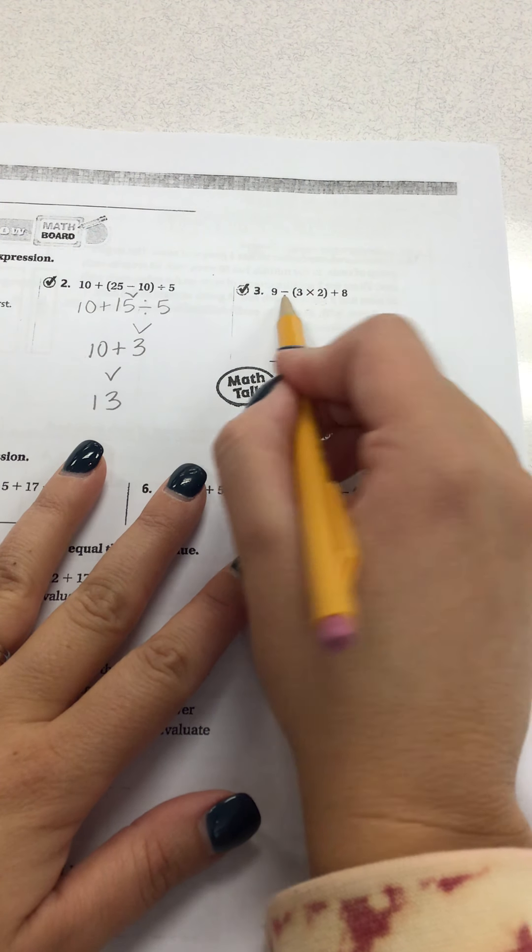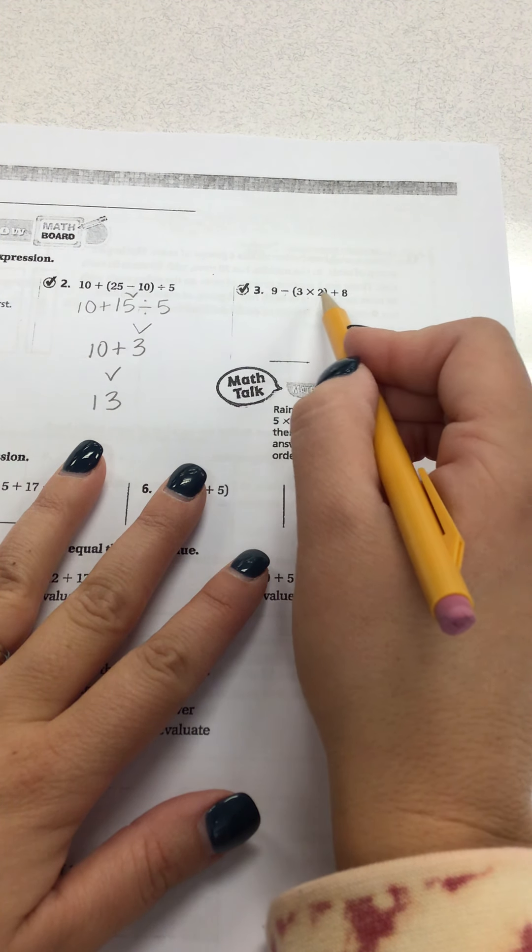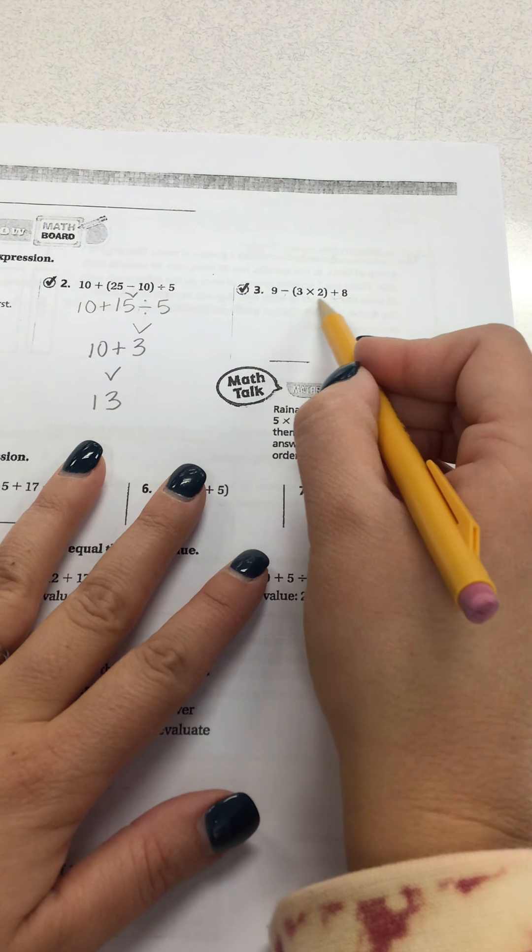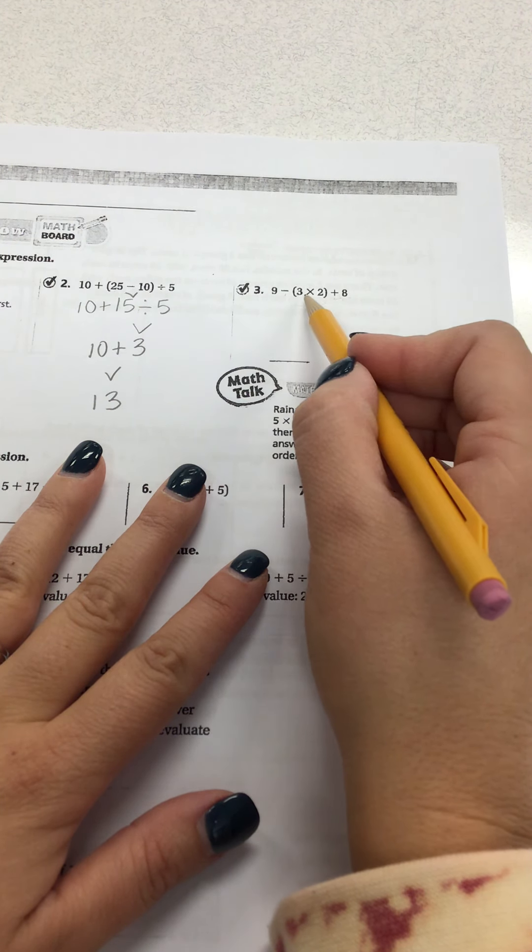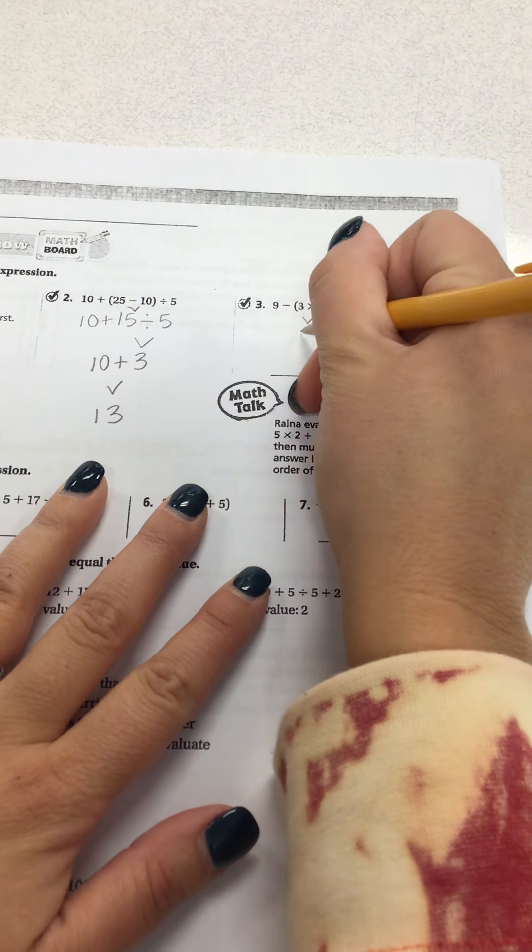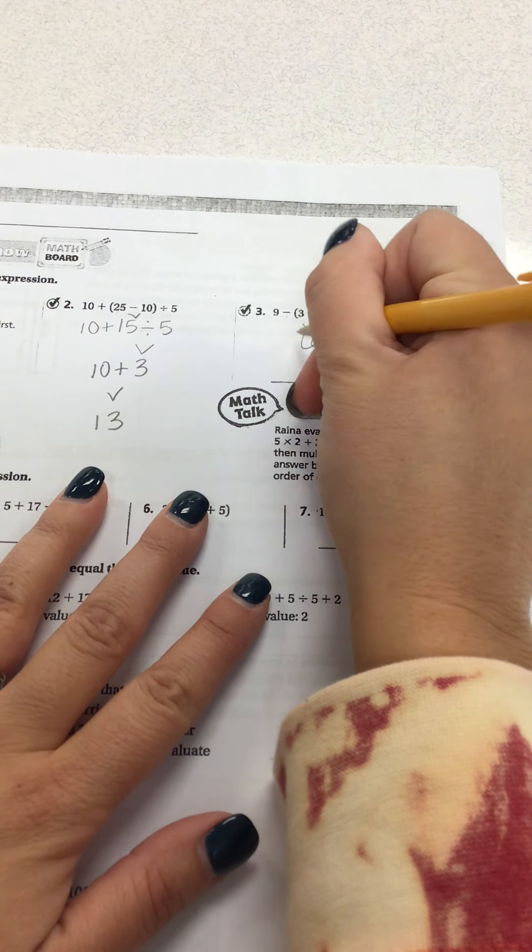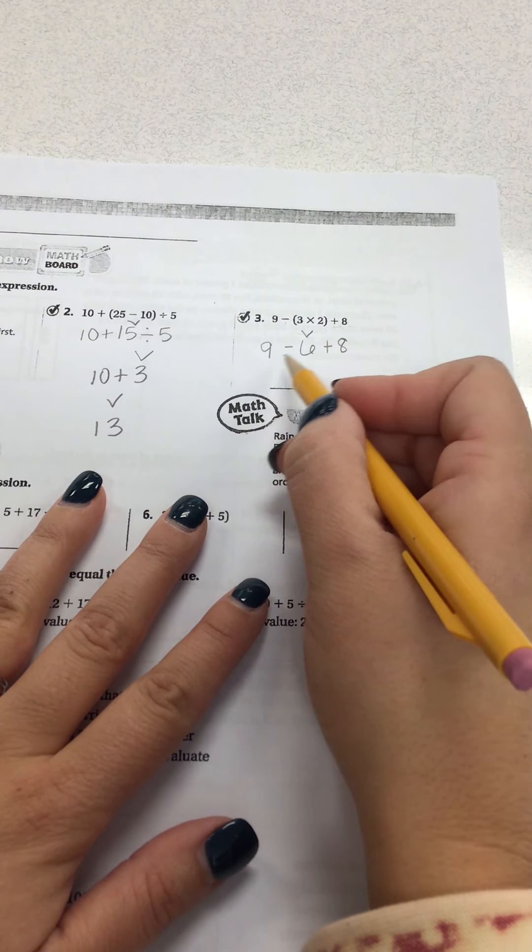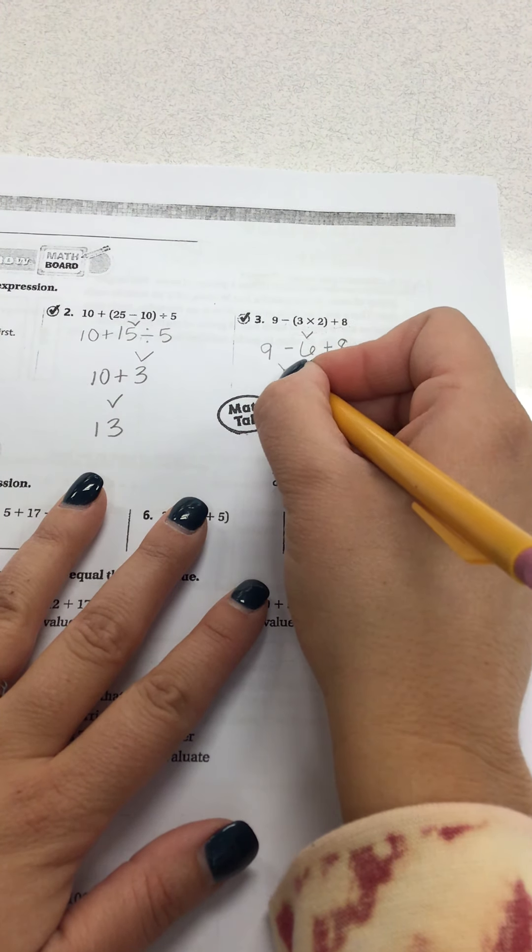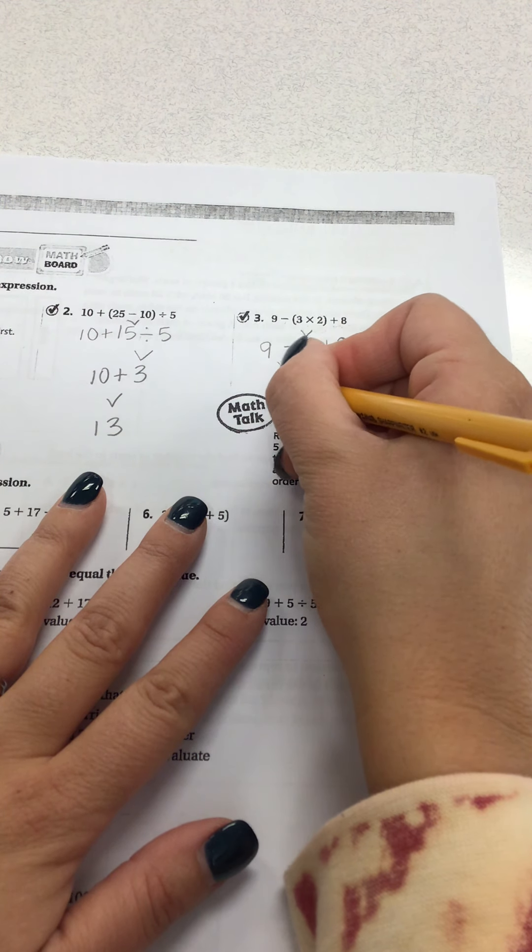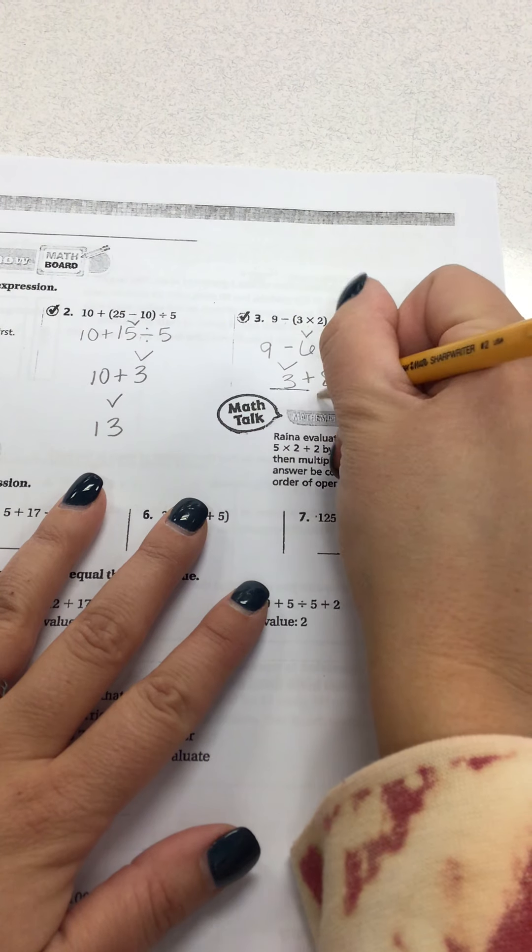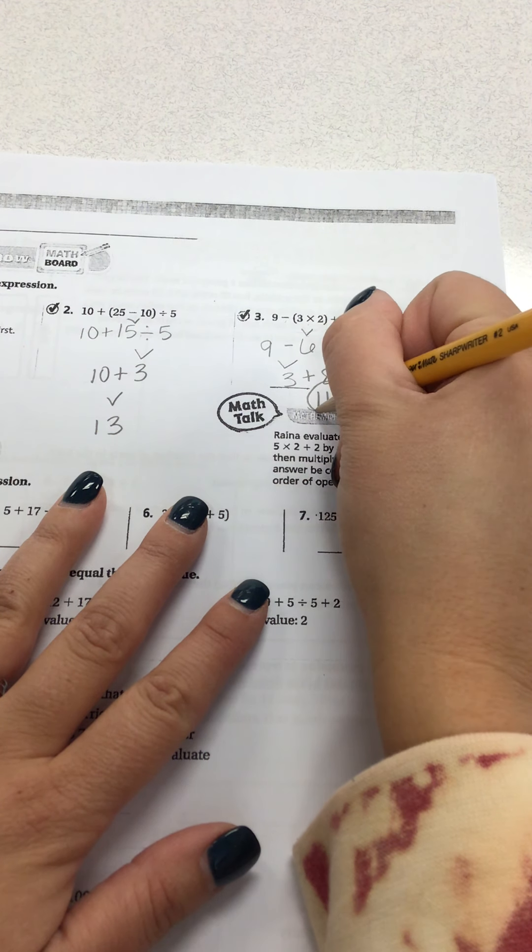So I have subtraction, multiplication, and parentheses, and addition. So I'm going to start with my parentheses because that comes first. 3 times 2 is 6. Bring down the plus 8 and the 9 minus. Now I can work from left to right. So 9 minus 6 is 3 plus 8. I bring that down. My answer is 11.